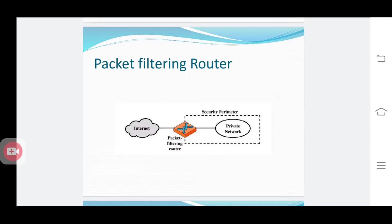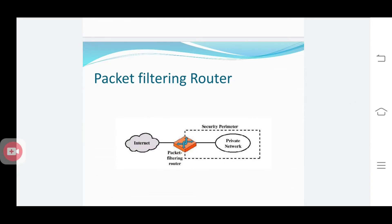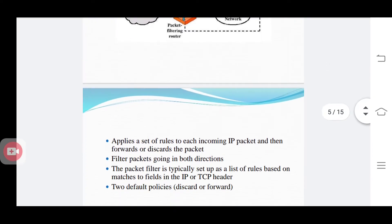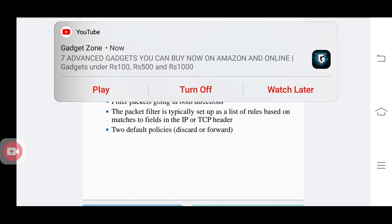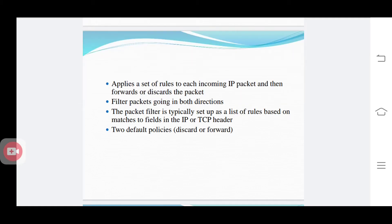The first category is the packet filtering router. This is a router which connects the internet with a private network. This packet filtering router maintains security parameters or security policies to check whether an IP packet follows some security criteria or not. It applies a set of rules for each incoming IP packet and then forwards or discards the packet — following two policies: a forward policy and a discard policy. If the IP packet meets the security criteria, it will be forwarded into the internal organization's network; otherwise, it will be discarded from the firewall itself.